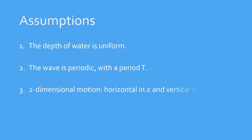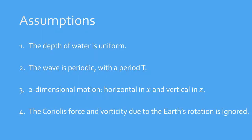We are now moving on to the assumptions that are applied in the linear wave theory. First, we look at the assumptions that restrict the physical situation considered. Number one: constant water depth, so a flat bottom. Number two: periodic wave with a period T, or constant frequency. Number three: two-dimensional motion horizontal in X and vertical in Z. And finally, number four: the Coriolis force and vorticity due to the Earth's rotation are ignored.